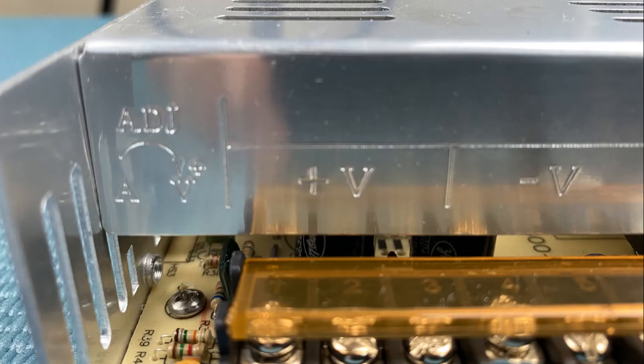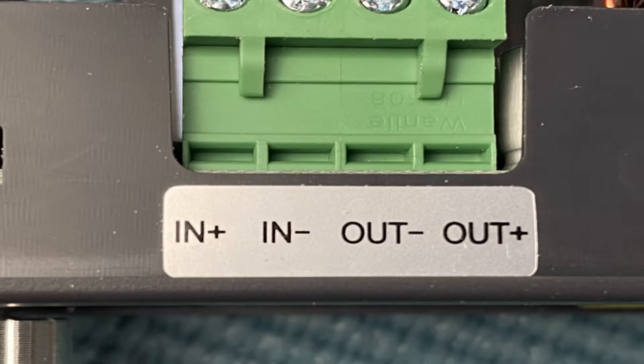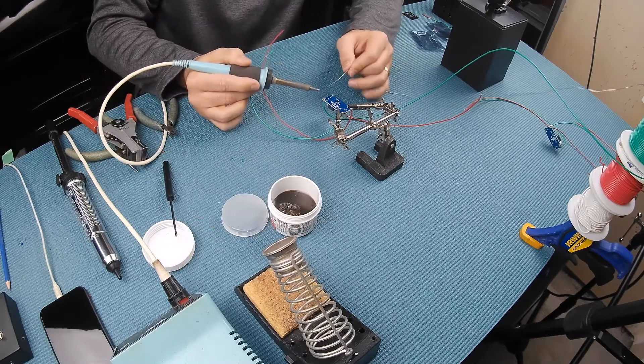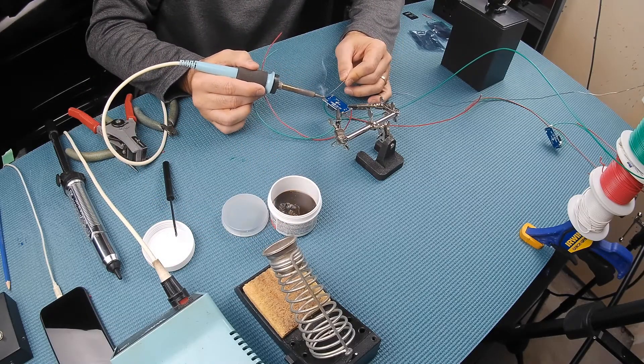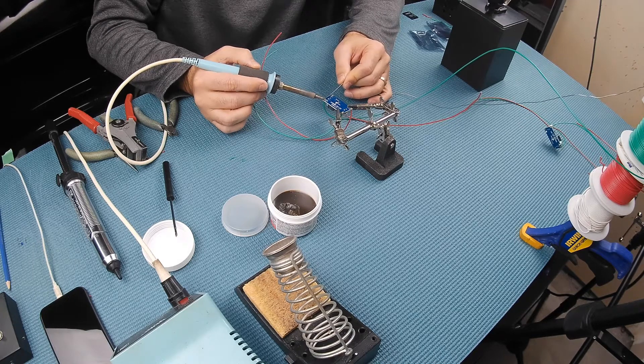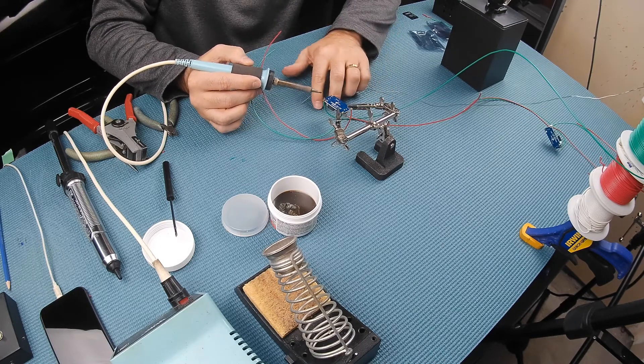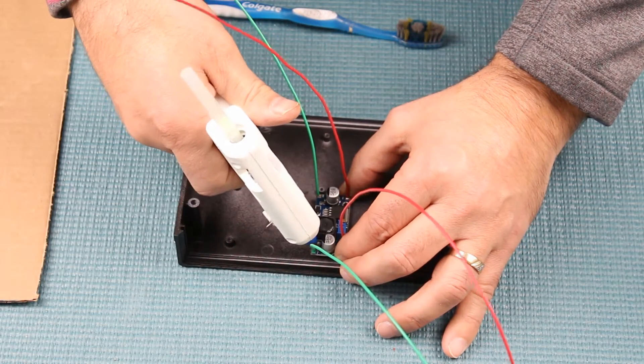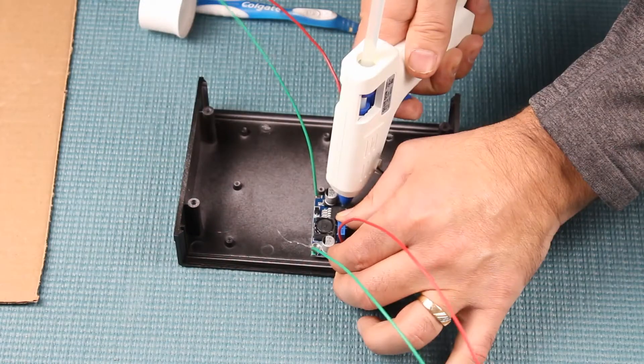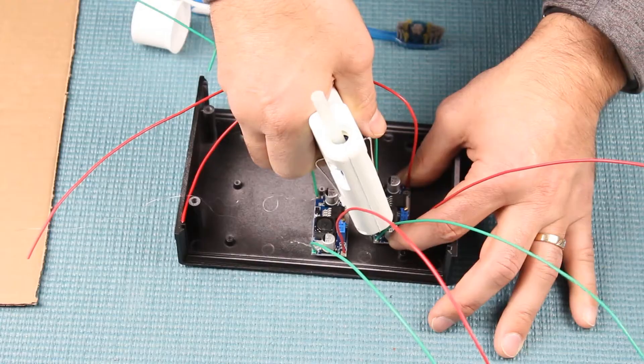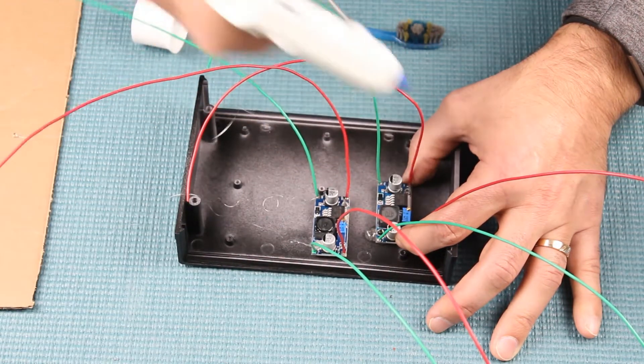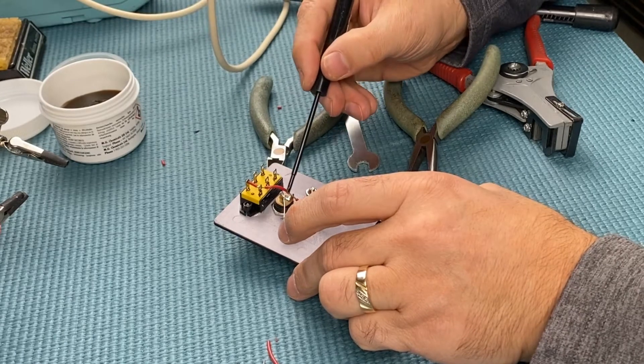There isn't any real schematic on this one, just positive to positive, negative to negative, and being aware of inputs and outputs. I'll solder wires to the buck converter's input and output. Once complete and using hot glue, we'll mount the converters in place.